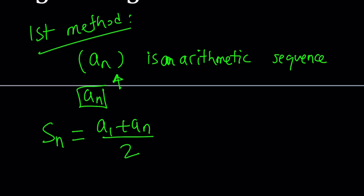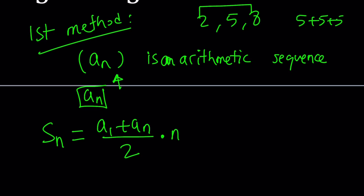For example, if I have 2, then 5, then 8 — this is an arithmetic sequence. The average of 2 and 8 is 5, so this is the same as 5 plus 5 plus 5. That's how the distribution works with arithmetic sequences. You multiply by the number of terms, because the average value of each term times the number of terms gives you the sum.